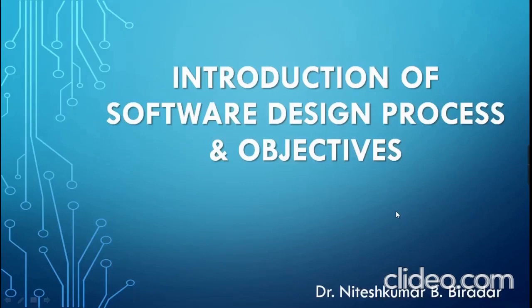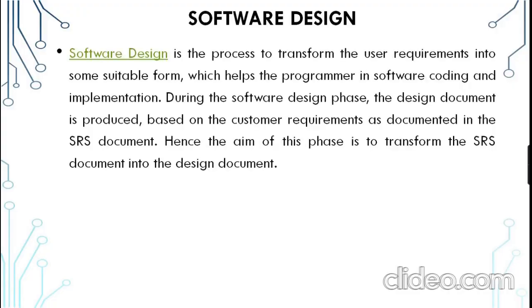Hello everyone. In this video I am going to explain the software design process and its objectives. Software design is the process to transfer the user needs, wants and requirements into some suitable form which helps the programmer in the software coding and implementation. This designing phase will help the programmer in software coding and implementation of the system.